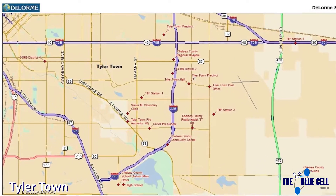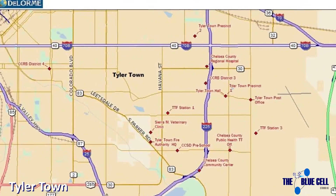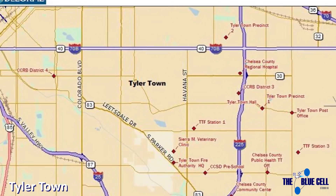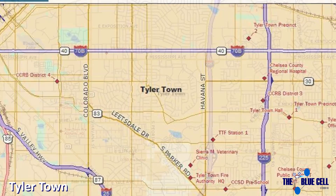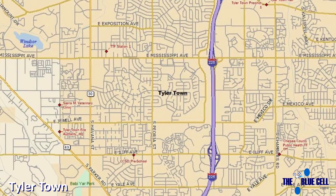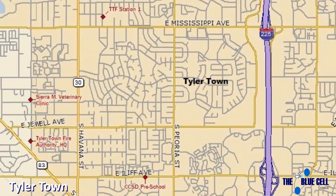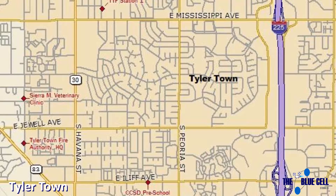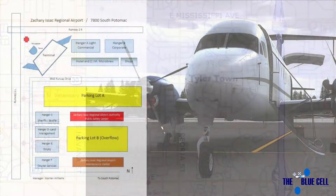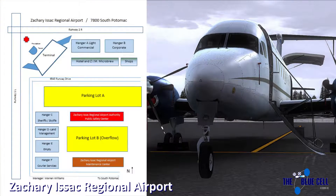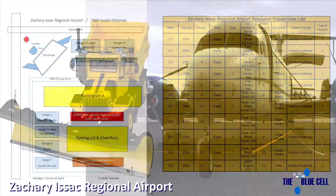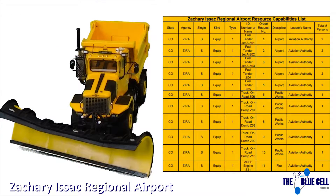Tyler Town is an unincorporated jurisdiction within Chelsea County. They have their own police force and fire department and use a private ambulance company. The Zachary Isaac Regional Airport has a small number of commercial flights but also has some specialized equipment that could be useful in an emergency.